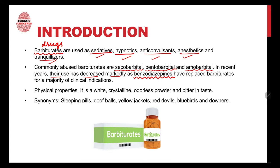Regarding the physical properties of barbiturates: they are white and crystalline in nature, they have no odor — that is, they're odorless — and they have a bitter taste. Synonyms used for barbiturates include sleeping pills, goofballs, yellow jacket, red devil, blue birds, and downers.